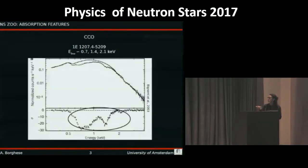Here in the bottom panel, the residuals with respect to just a black body component highlight the presence of absorption features. Here we have harmonically spaced absorption features at 0.7, 1.4, and 2.1 eV.